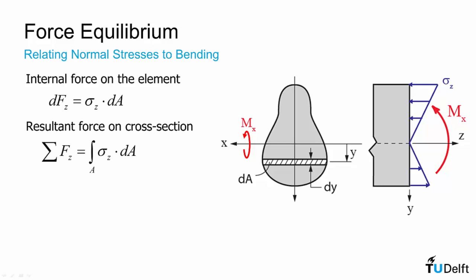Now there's no resultant force on the cross section, so if we integrate, if we sum all of those forces, which is integrating sigma z over da, over the entire domain of the cross section, it has to be equal to zero.